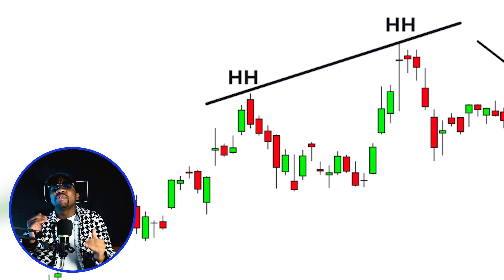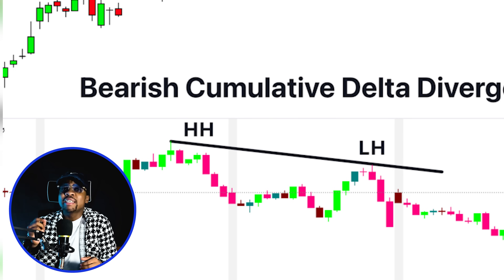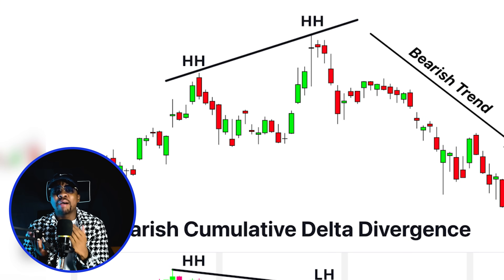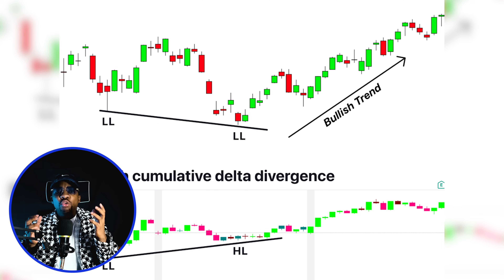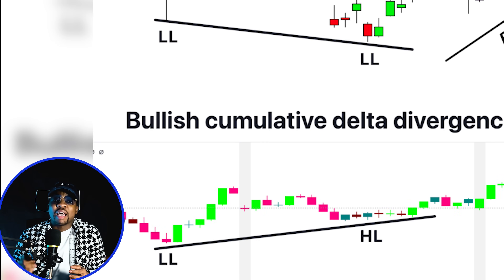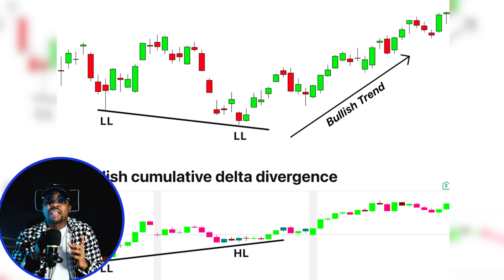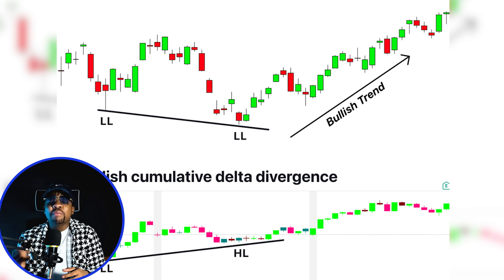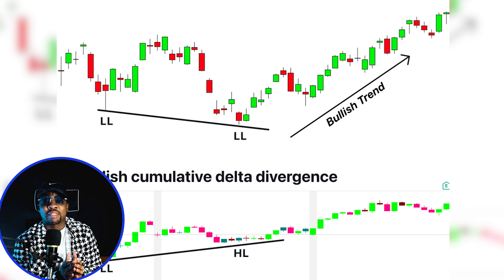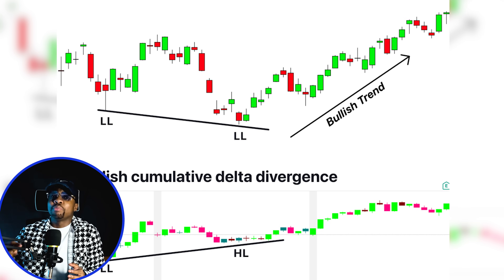What does cumulative delta tell us that candlesticks can't? If price makes a new high but cumulative delta doesn't, that is weakness — it means price was pushed up but buyers were exhausted. And if price makes a new low but delta didn't make that new low and instead rose, that means sellers were losing momentum and a reversal could be near. You are now seeing the real intent behind the candles.